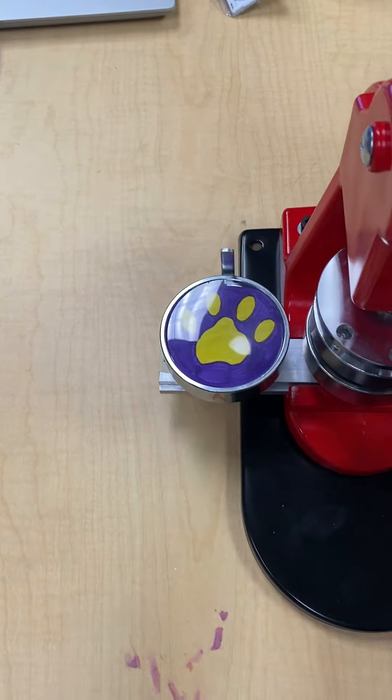And then we'll take our decorated part of the button and place it on top. And then our clear sheet goes on top of that.